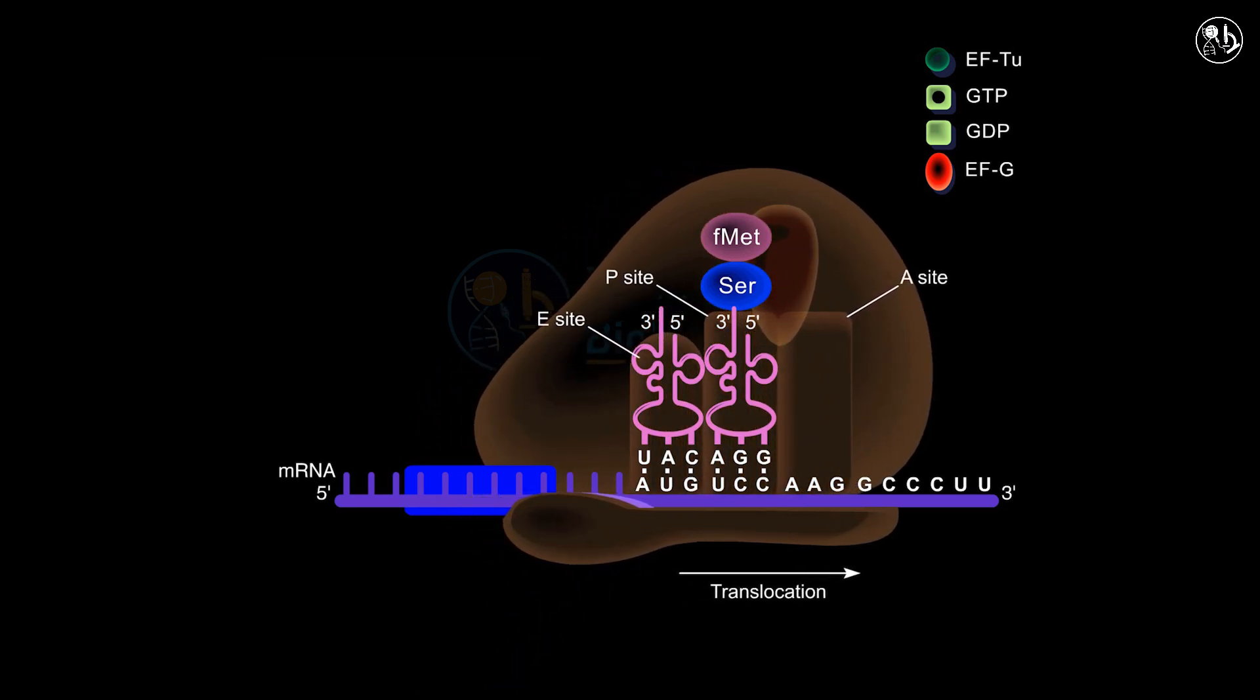The uncharged tRNA transitions from the P site to the E site, preventing any new aminoacyl tRNA from binding to the A site until the translocation is finalized. Once the tRNA is securely positioned in the P site, the uncharged tRNA is expelled from the E site. With the A site now vacant, it is ready to receive the next aminoacyl tRNA, thus allowing the elongation cycle to persist. Typically, a polypeptide is composed of approximately 300 amino acids.